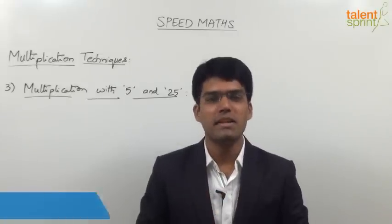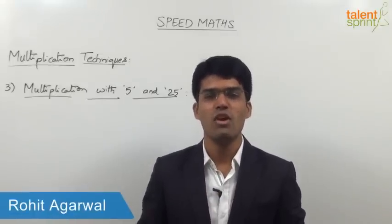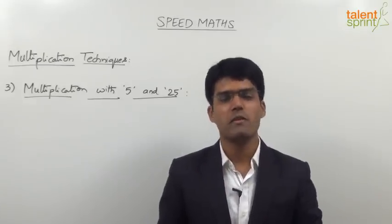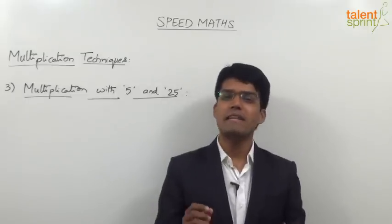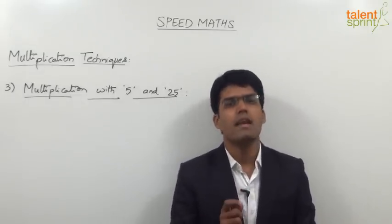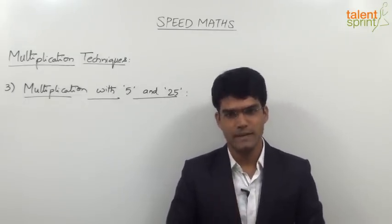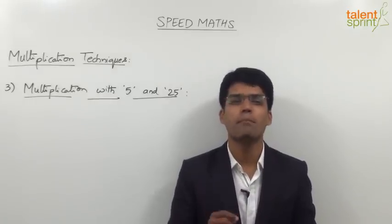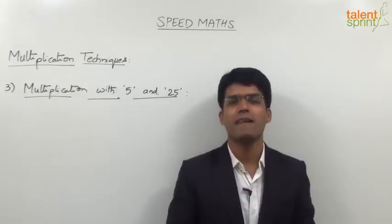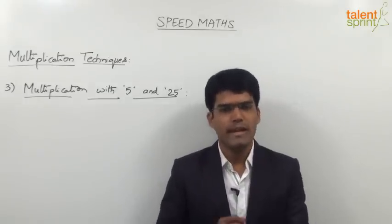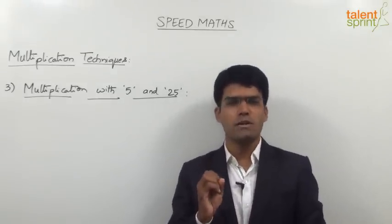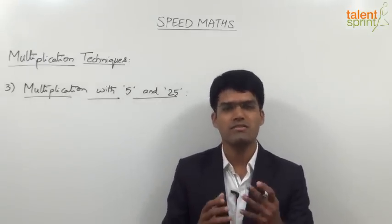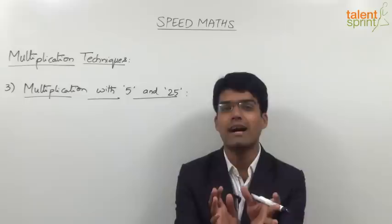Let us now learn the third multiplication technique, which is useful for multiplication with 5 and 25. We are going to understand how to multiply a given number with 5 and 25 in less than 1 second. Yes, what you have heard is exactly correct — you can multiply numbers with 5 or 25 in less than 1 second. Now to begin with, let me ask you a few simple questions where we are going to multiply numbers with 5.